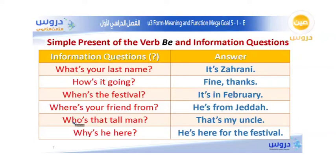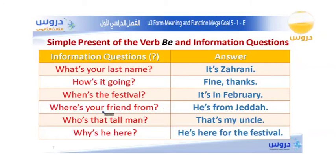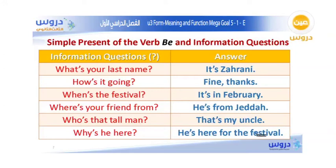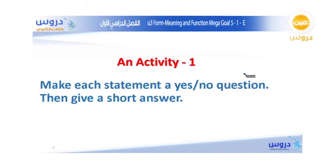Who is that tall man? — That is my uncle. Why is he here? — He is here for the festival. So those are examples of information questions with the verb to be in the simple present tense.